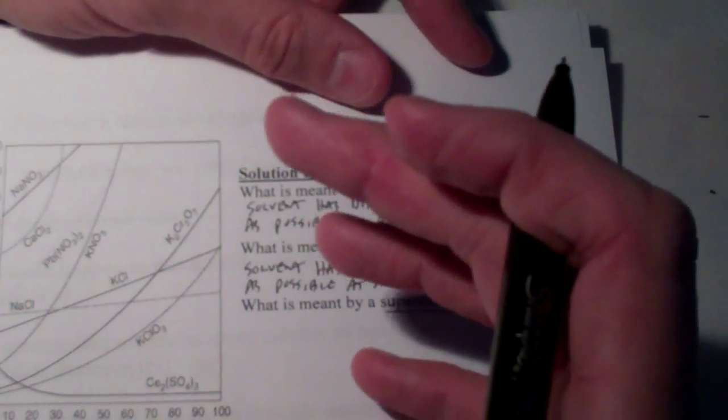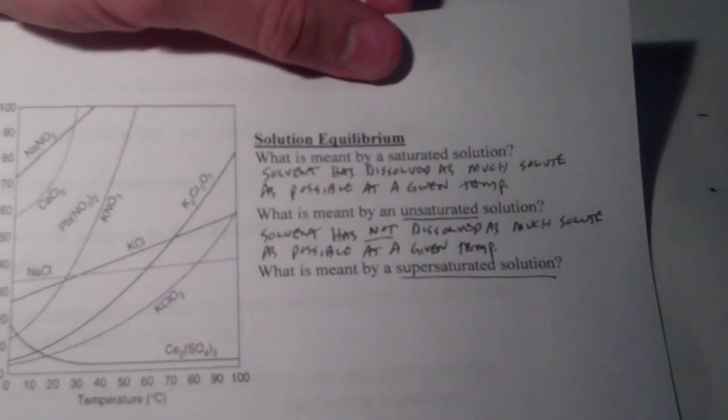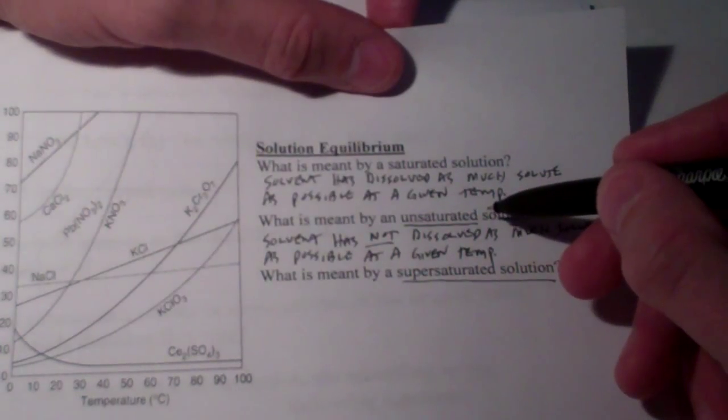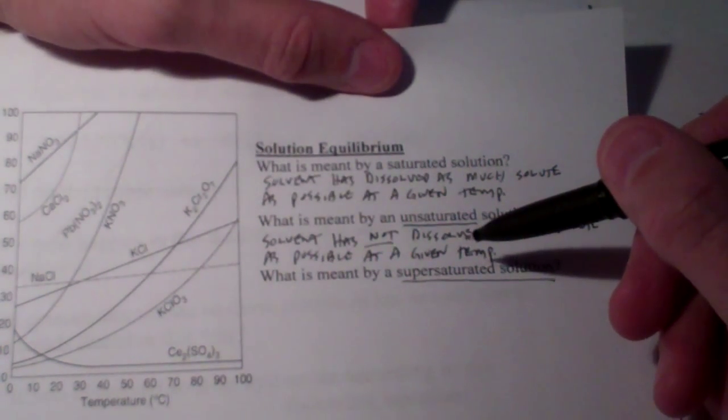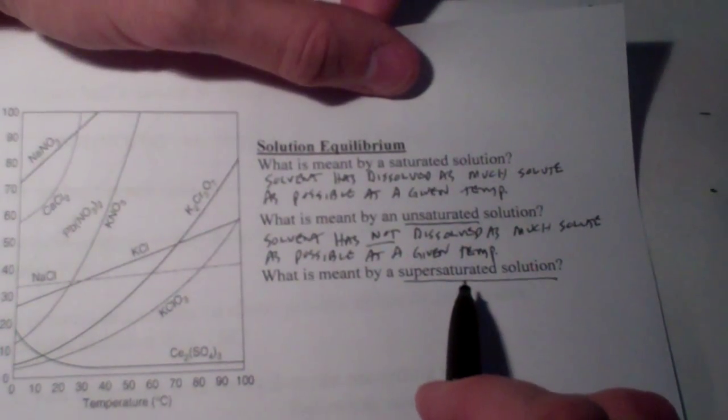If I had a big beaker of water and put in one crystal of salt, that would easily dissolve. Do you think I could put in more? Absolutely. So that solution, since I could add more and it would still go into solution, would be considered unsaturated.